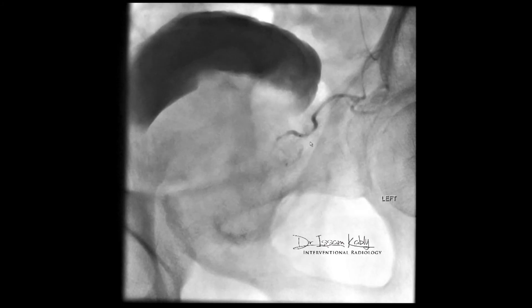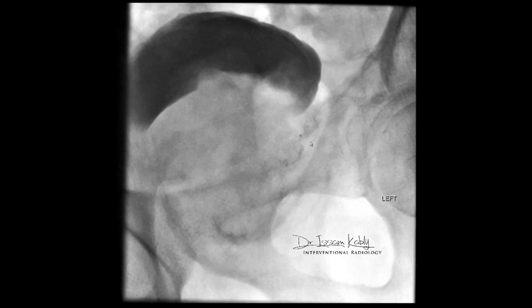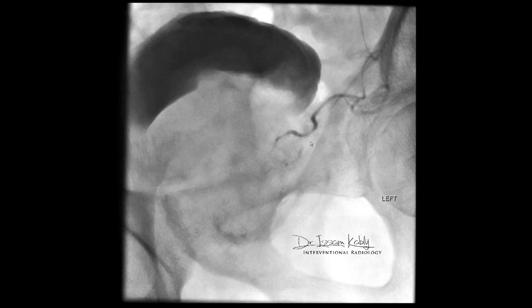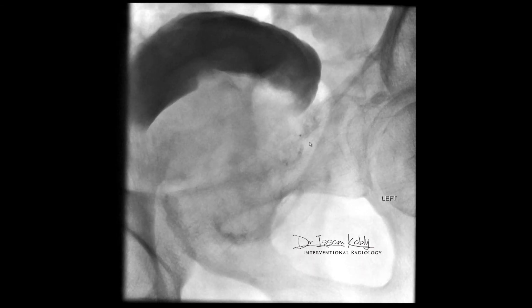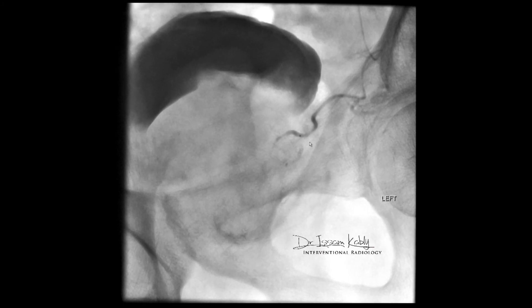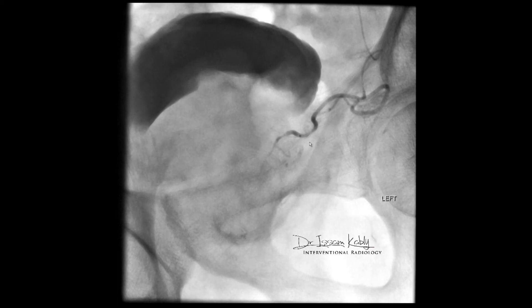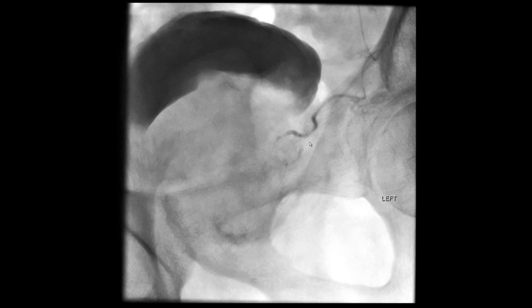This is at the end of the embolization. You can see no more blood flow is going forward — all the contrast is refluxing, which is a sign that the procedure has to be stopped and that the procedure is successful. Once we do that, no more blood is coming to the prostate and we immediately control the hematuria. But the beneficial effect will not stop there — it will progress further to decreasing the size of the prostate, giving a secondary bonus to the patient.